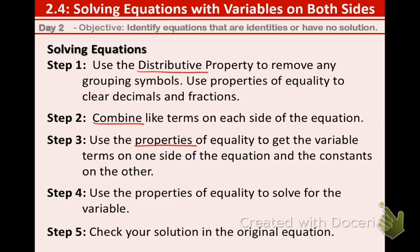Step 4, we are also going to use the properties of equality to solve for the variable, which means get the variable by itself on one side. And step 5, we are going to check our solution in the original equation. We just plug the number in for the variable and make sure it works. So those are the 5 steps.